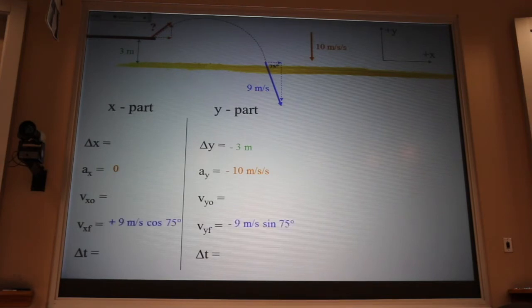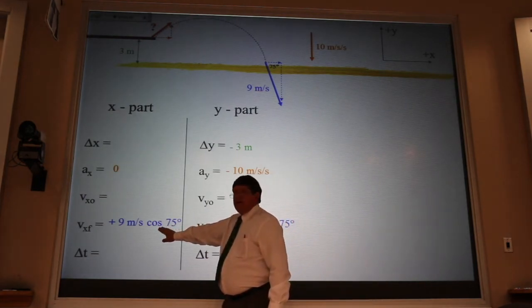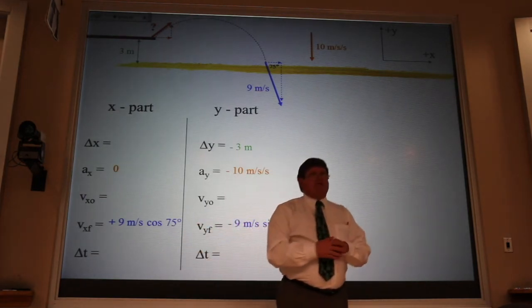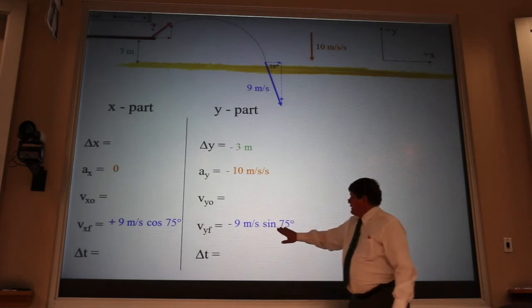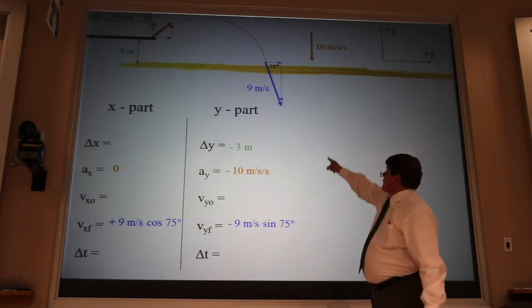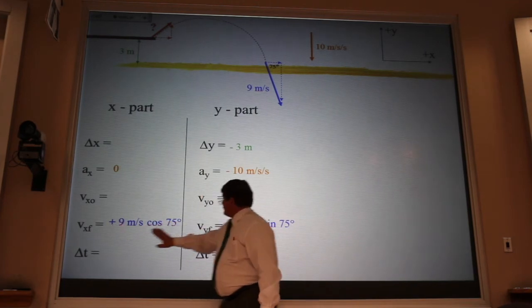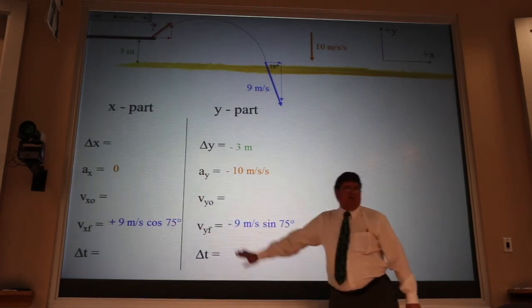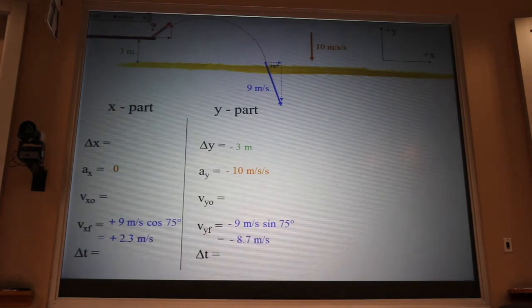Now, the x part is going to be the 9 times cosine of 75 degrees, because that x part is cozy with the angle. And the y part is going to be the 9 times the sine of 75 degrees. Now, that vector goes to the right and down. It's to the right, so it's positive x. It's down, so it's negative y. Now, when I use my calculator, I get 2.3 and negative 8.7.